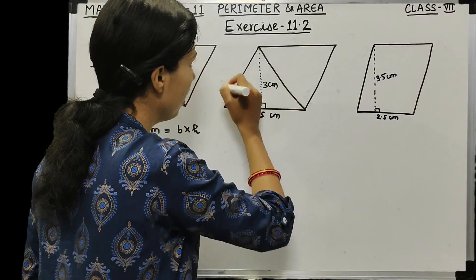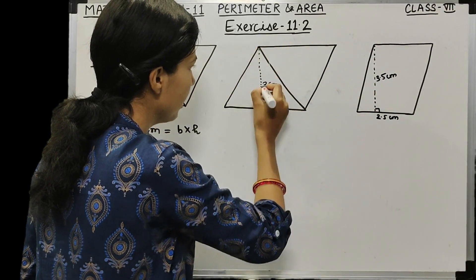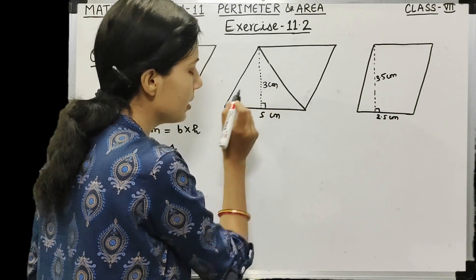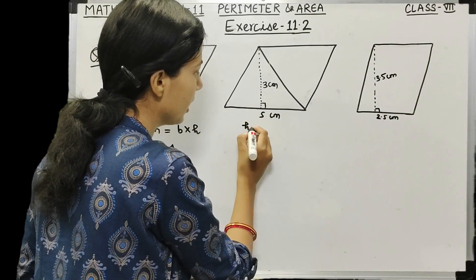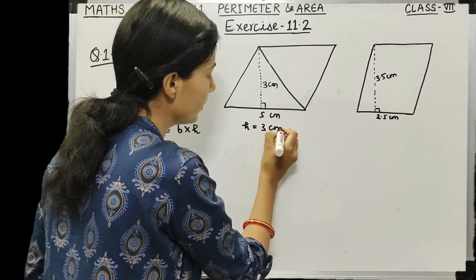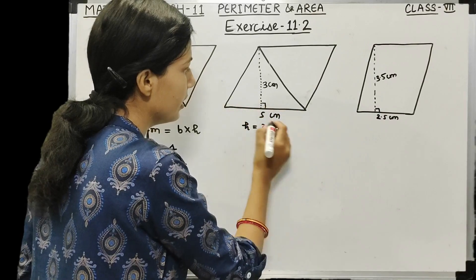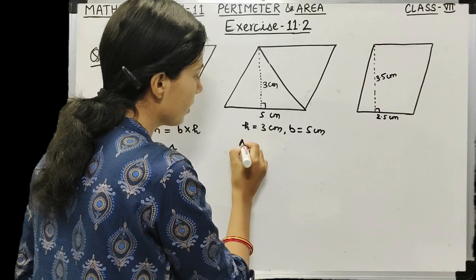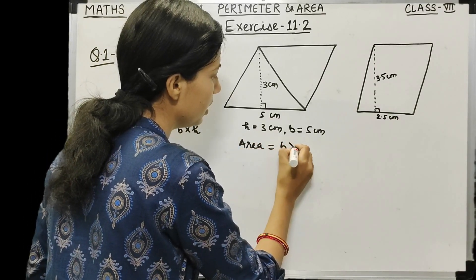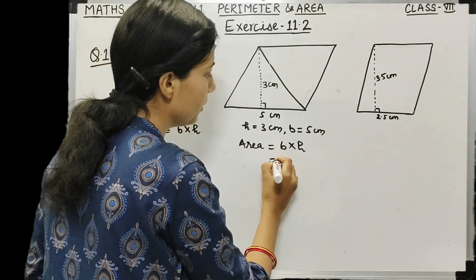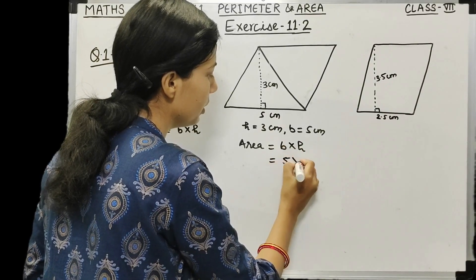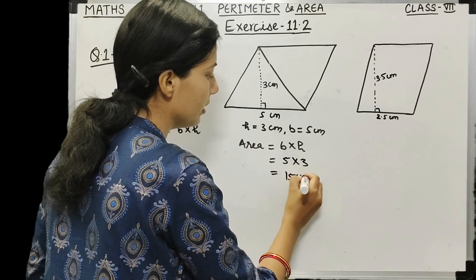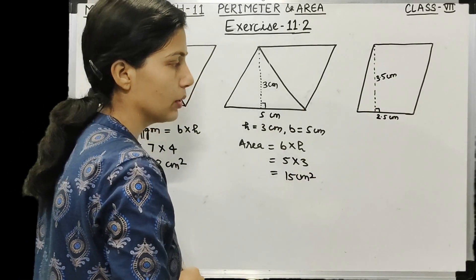For the second parallelogram, from this vertex a perpendicular is dropped onto the opposite side — that is the height. Height is 3 cm and base is 5 cm. So area of parallelogram = base × height = 5 × 3 = 15 cm².